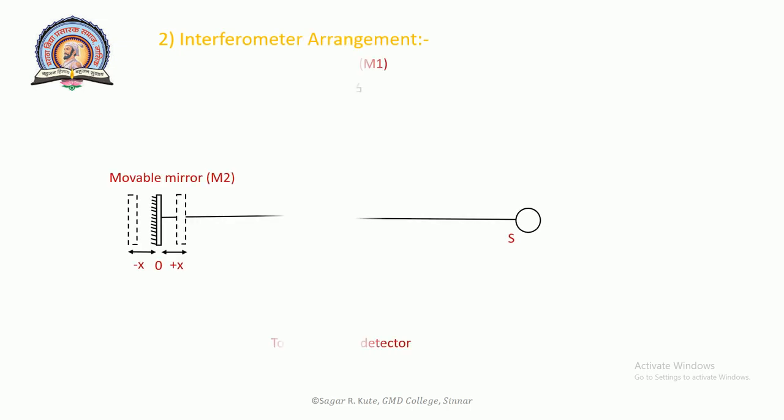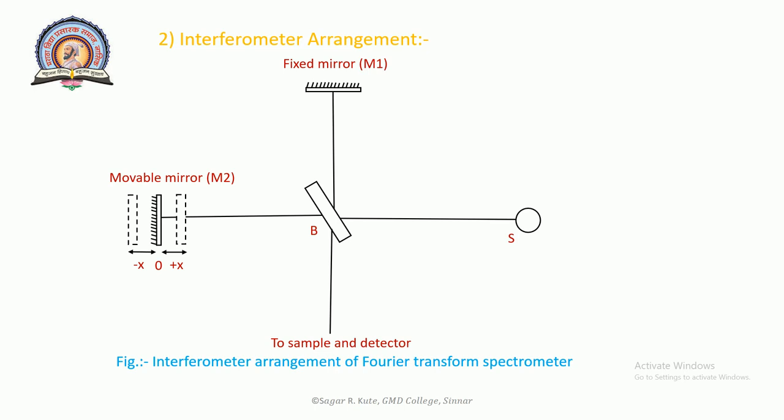Second will be the interferometer arrangement. This diagram shows interferometer arrangement of Fourier transform spectrometer. The basic components of Fourier transform spectrometer are given in figure. The source is usual glower operated at very high temperature. The Michelson interferometer consists of source S, beam splitter B, and plane mirrors M1 and M2. The mirror M1 is fixed and M2 is capable of movement. The beam splitter allows 50% of radiation to mirror M1 and other 50% to mirror M2.